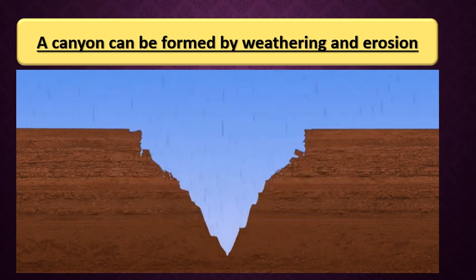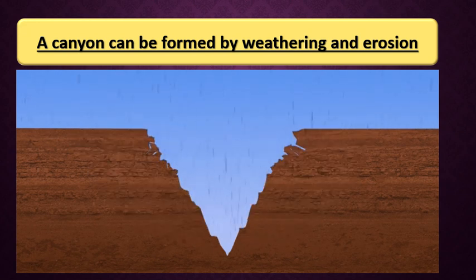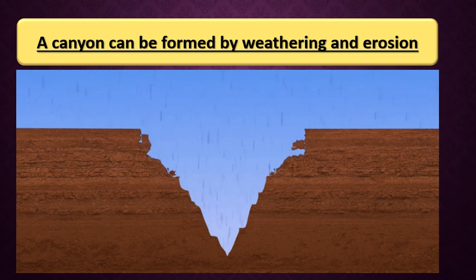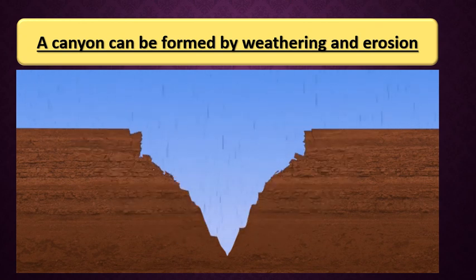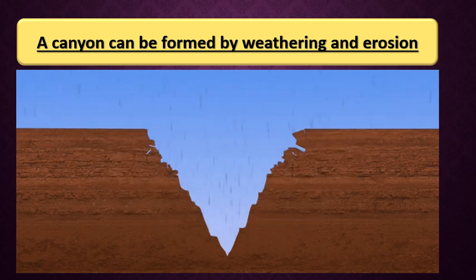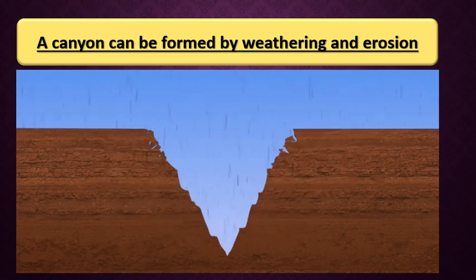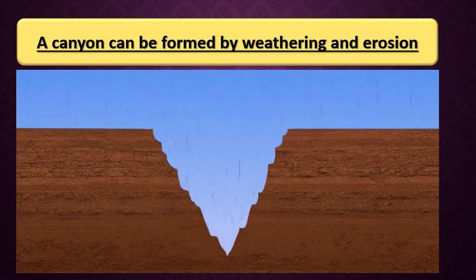Water running above the land will make two processes: weathering and erosion. Weathering breaks down the rocks, then erosion moves the sediments from one place to another. The water has a pathway and will move on low land with two sides of land on either side. This shape is called a valley. When this valley becomes deeper and deeper, it will form a canyon - because as we know, a canyon is a deep valley.